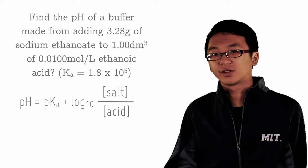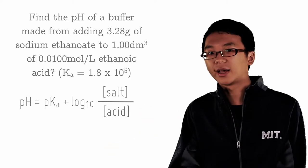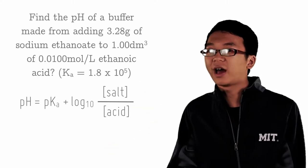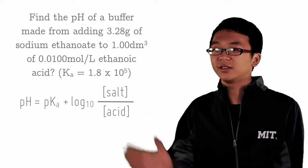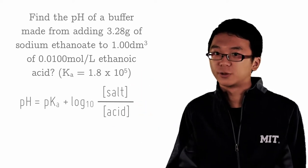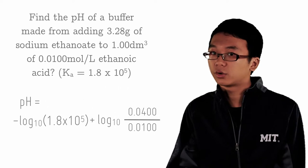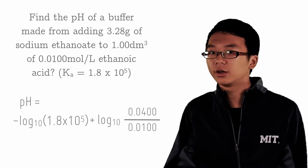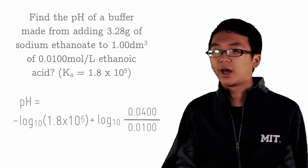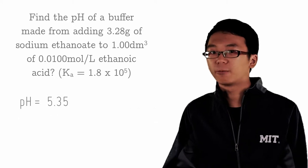That sounds easy. Ka is already given. Concentration of ethanoic acid is already given. The concentration of ethanoate is almost given. Just a quick mole calculation will give you the concentration. Put all of that into the equation, punch the calculator with your fingers, not your fists, and you will get pH equals to 5.35.